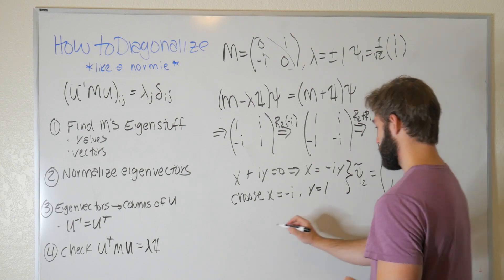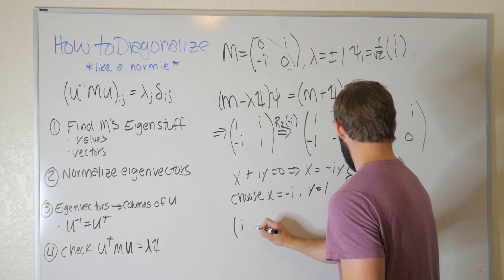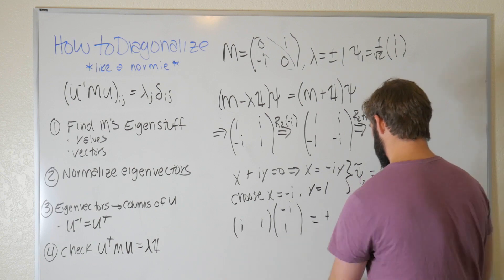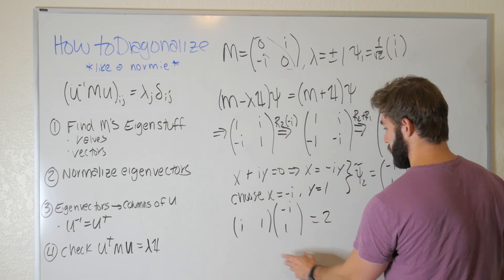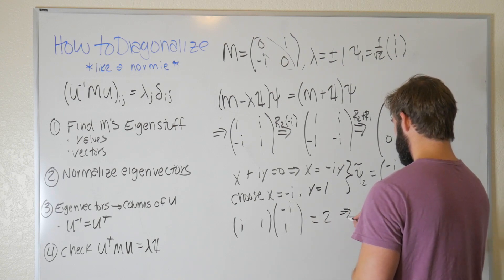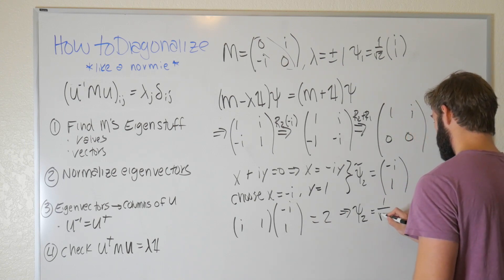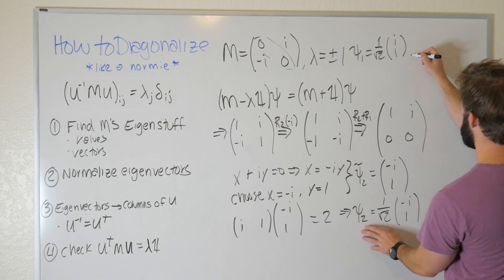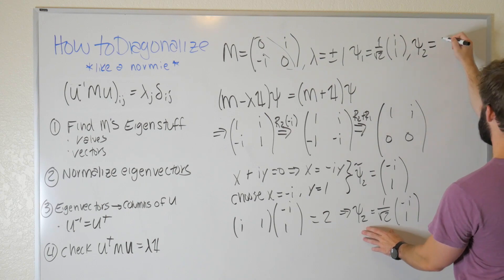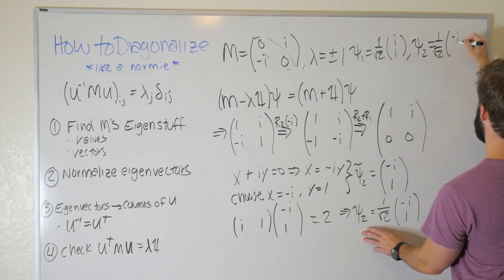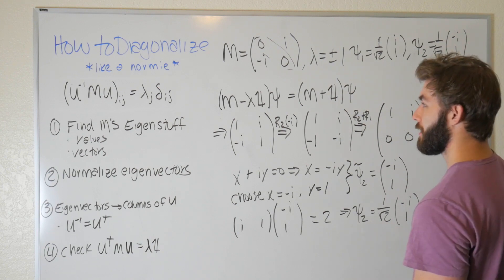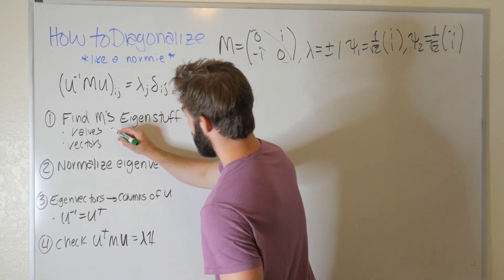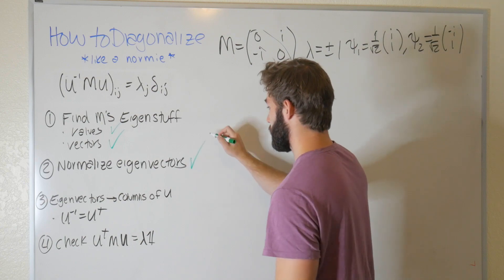Normalizing the second eigenvector: inner product is [i, 1] · [−i, 1]ᵀ = (i)(−i) + (1)(1) = 1 + 1 = 2, so we divide by √2. Thus ψ₂ = (1/√2)[−i, 1]ᵀ. Now we have all the pieces to construct our unitary matrix U that will diagonalize M — we have our eigenvalues and our normalized eigenvectors.